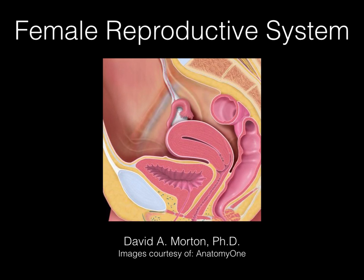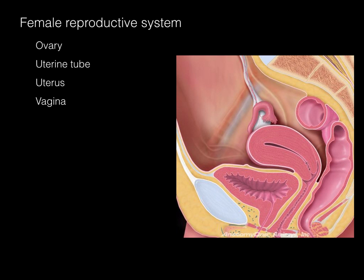The female reproductive system consists of the ovary, uterine tube, uterus, and vagina. The ovary is the primary sex organ and produces the gamete, or the ovum, which is responsible for fertilizing with the sperm to make a zygote.